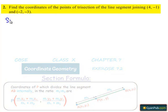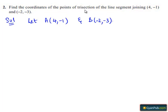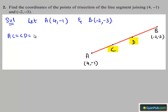Moving on to the solution, let the given points be A(4, -1) and B(-2, -3). We need to find the coordinates of the points of trisection of the line segment AB. Let C and D be the points of trisection of AB, which means AC equals CD equals DB.